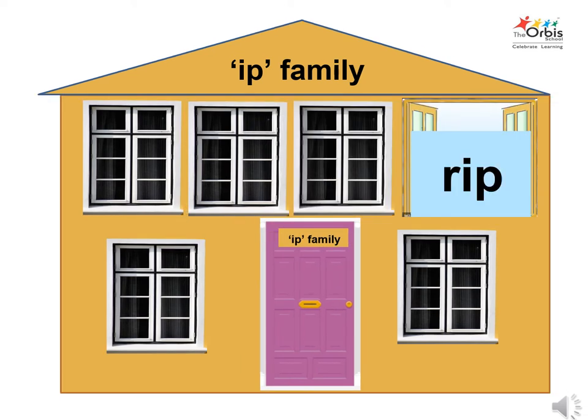Let's find the name of the fourth family member living in the house. The phonic sound of r is r. To combine the sound of r with the sound of ip to get the name of the person inside the window — that is rip. Say hello to rip.